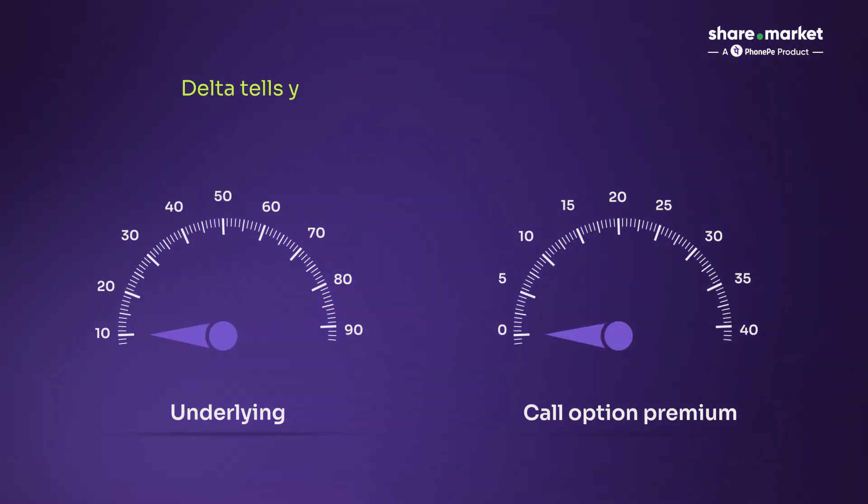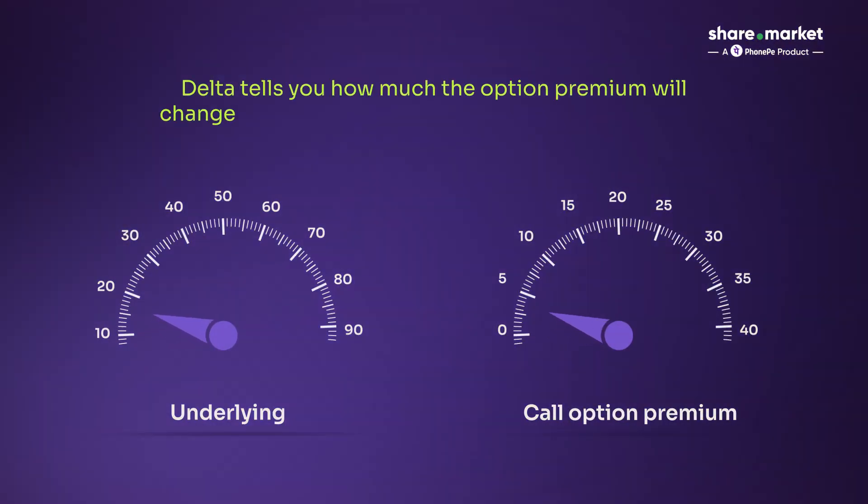The Greeks are like the backbone of an options premium — they explain every twist and turn in the price. There are four main Greeks: Delta, Gamma, Theta, and Vega. Let's first talk about Delta. We all drive a car or bike and see the speedometer. Similarly, Delta is like the speedometer of an option.